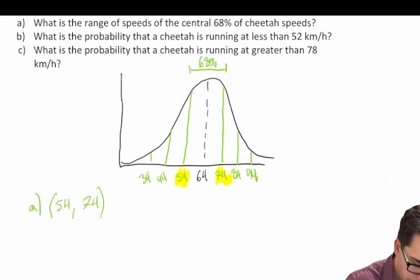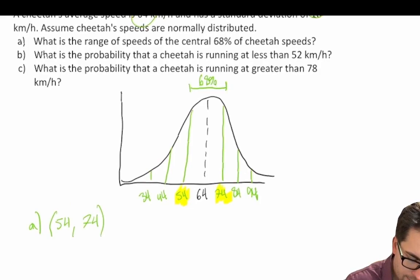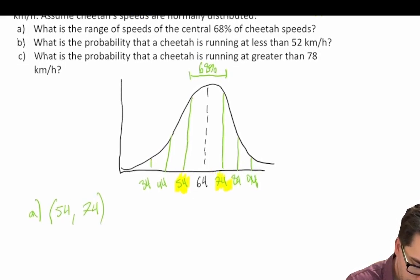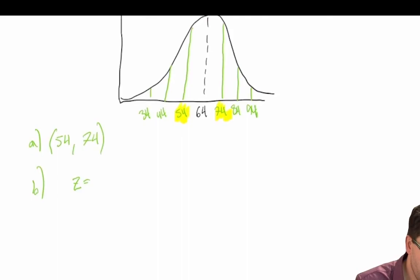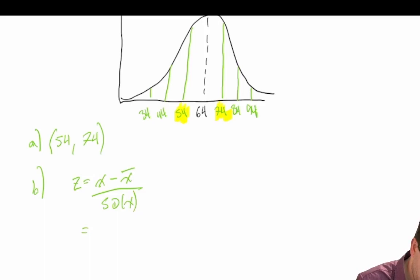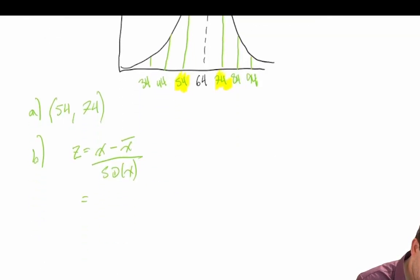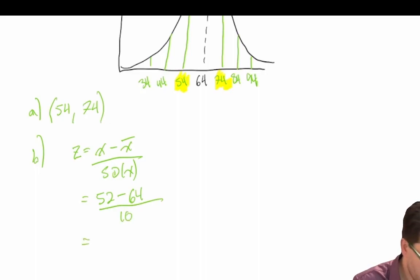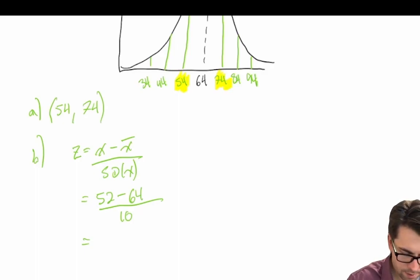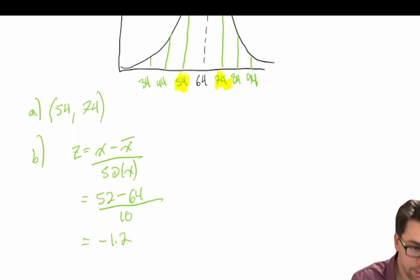Question B: what is the probability that a cheetah is running at less than 52 kilometers per hour? We're going to calculate a Z score. Z is equal to the observed value of X minus the expected value of X, divided by the standard deviation of X. So that's 52 minus 64 divided by 10, which is negative 12 divided by 10, equal to negative 1.2. That's our Z score.